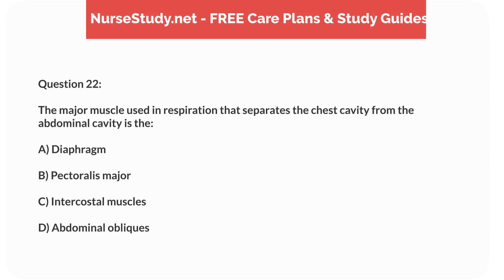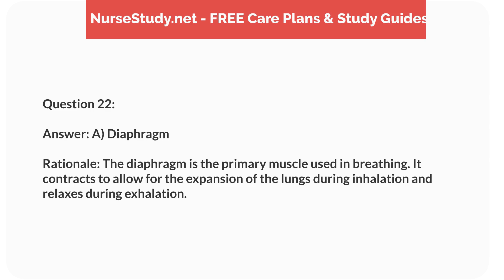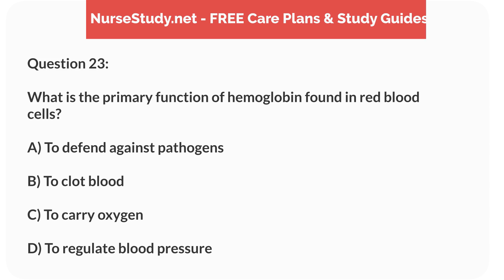Question 22: The major muscle used in respiration that separates the chest cavity from the abdominal cavity is the A) diaphragm, B) pectoralis major, C) intercostal muscles, D) abdominal obliques. Answer: A, diaphragm. Rationale: The diaphragm is the primary muscle used in breathing. It contracts to allow for the expansion of the lungs during inhalation and relaxes during exhalation.